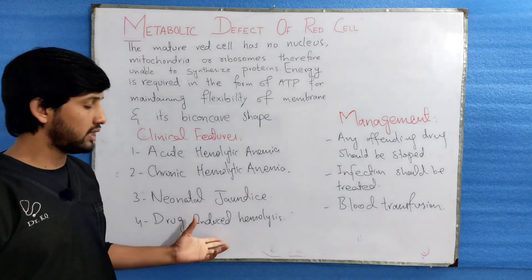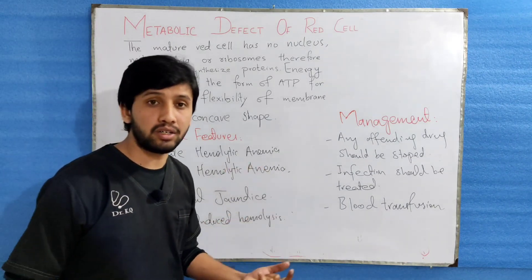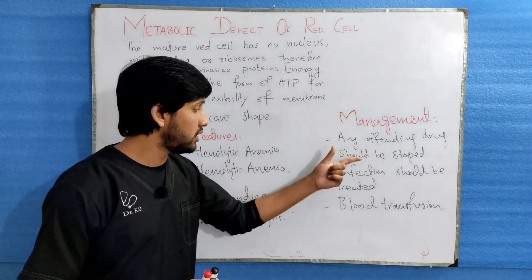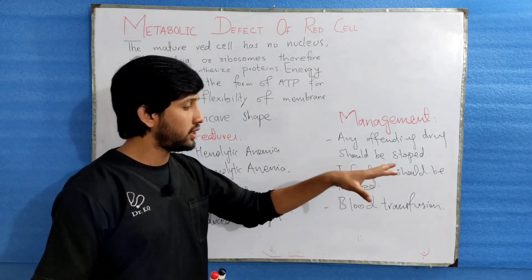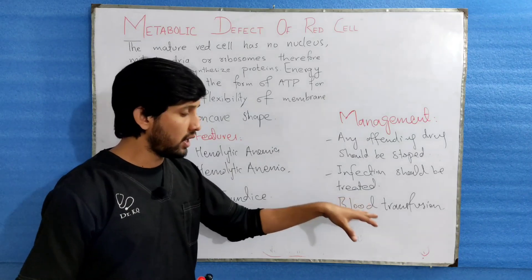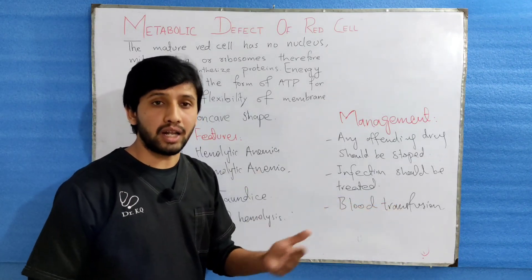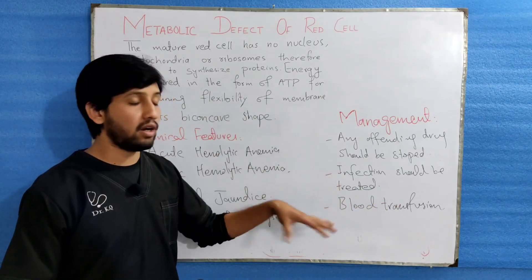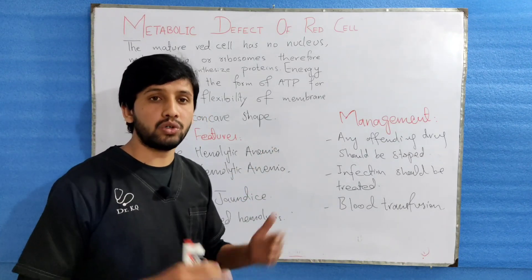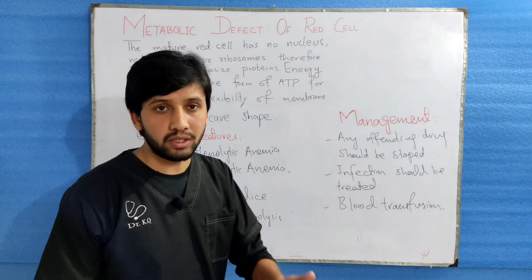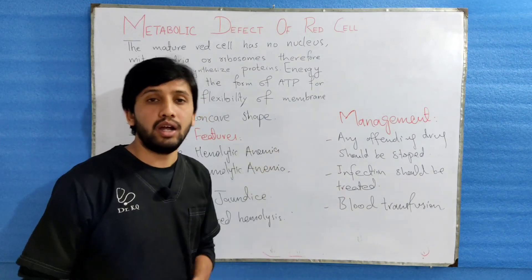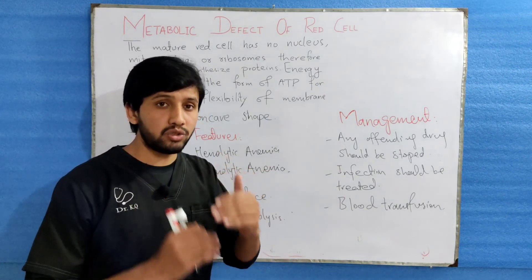Coming to management: first, any offending drug should be stopped — drugs such as aspirin, anti-malarial drugs, or other drugs leading to hemolysis. Second, infection should be treated. Third, blood transfusion can be a life-saving process. These management steps are important for patients dealing with these conditions.